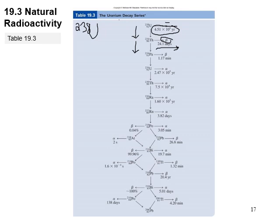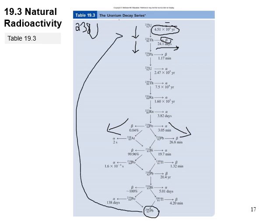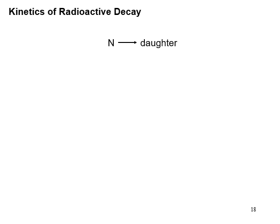Further down the decay series there are different pathways. The lead-206 to uranium ratio can give information about how old things are. Luckily, radioactive decay follows only one kinetic type. When a nucleus decays from parent to daughter — reactants to products — there is a rate law, and the daughter product is called just that.